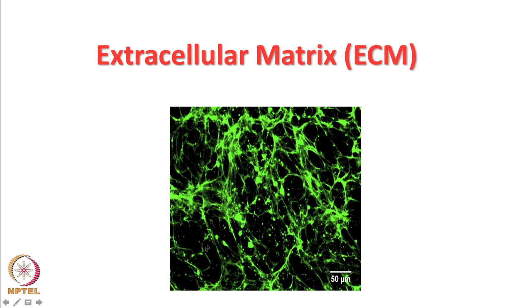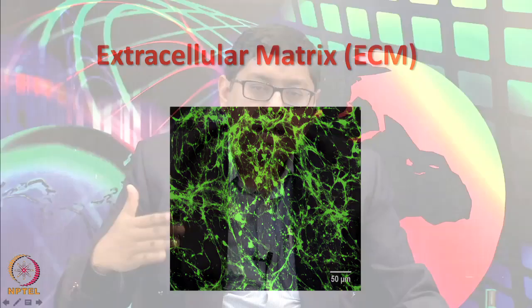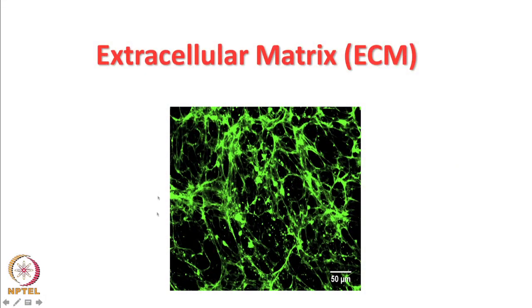The matrix can have zones devoid of any matrix, which amounts to having a pore, and this pore size is not uniform. At the same time, matrix fibers have different orientations. You can quantitatively determine the average angle of orientation, and the concentration of these proteins equates to the average density of the matrix. All of these are supposed to influence cell behavior.